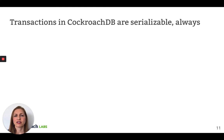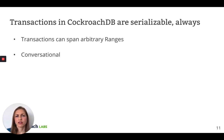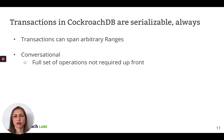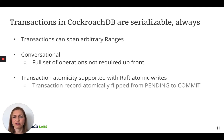The first thing to know about transactions in CockroachDB is that they are always serializable — we don't support any lower isolation levels. Transactions can also span arbitrary ranges, and they support a conversational protocol. The conversational protocol is important for supporting SQL, where the full set of operations may not be known up front. An important property of transactions is that they are atomic. To guarantee atomicity even for transactions that span multiple ranges, CockroachDB takes advantage of the range-level atomicity of Raft. Each transaction is associated with a transaction record, which is stored in a range just like other data. Updates to the transaction record go through Raft, which is how we support atomicity for transactions.